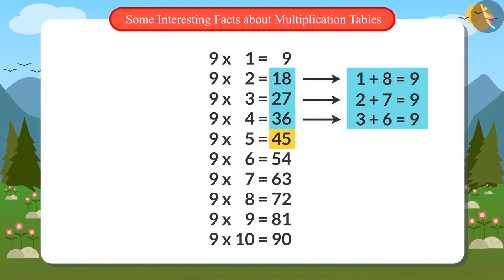Fifth number is 45. On adding the digits 4 and 5, the answer is also 9. Sixth number is 54. And now if we add 5 and 4, the answer is again 9. Now I will see the seventh number in the table of 9, that is 63. Adding the digits 6 and 3, the answer again is 9.